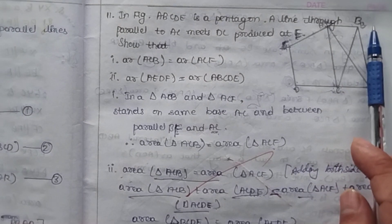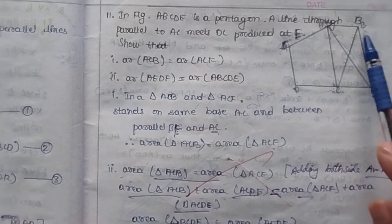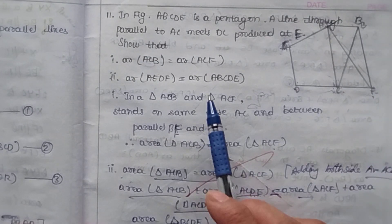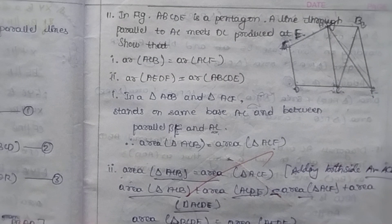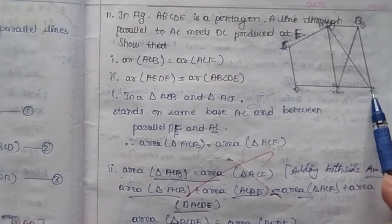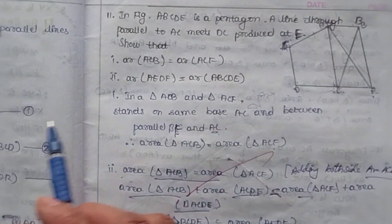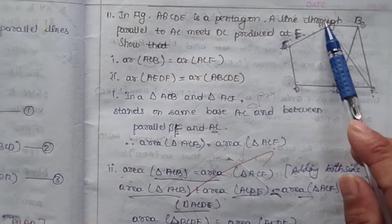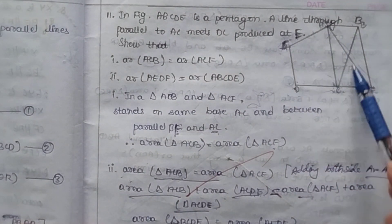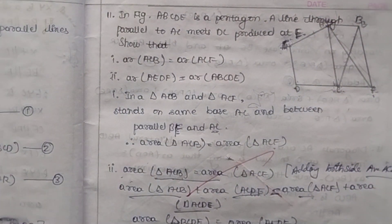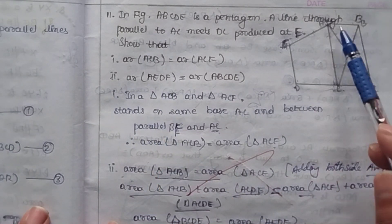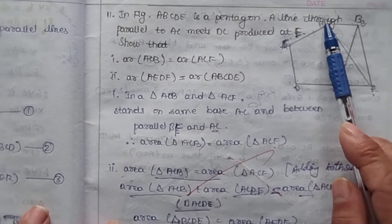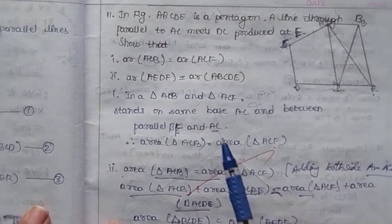A line through B, parallel to AC, meets DC produced at F. The first sub-question is to show that area of triangle ACB is equal to area of triangle ACF. The second sub-question is to show that area of quadrilateral AEDF is equal to area of pentagon ABCDE.